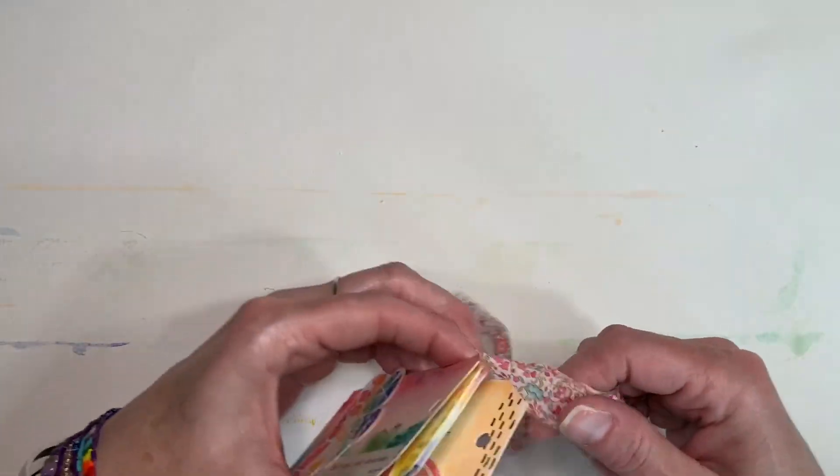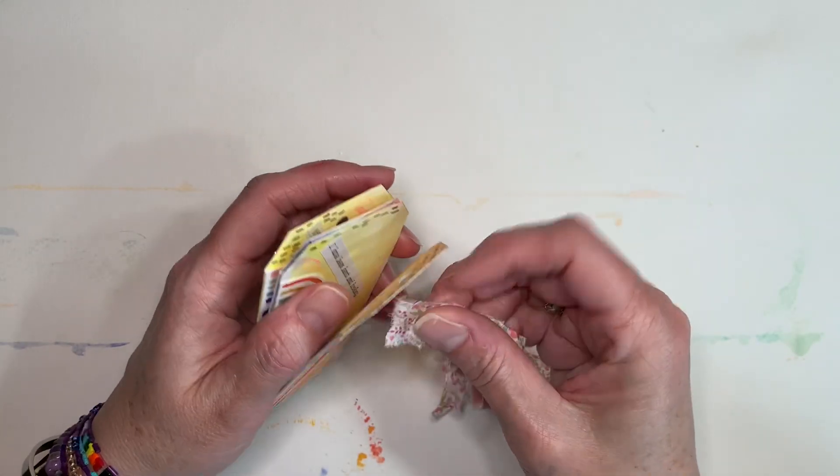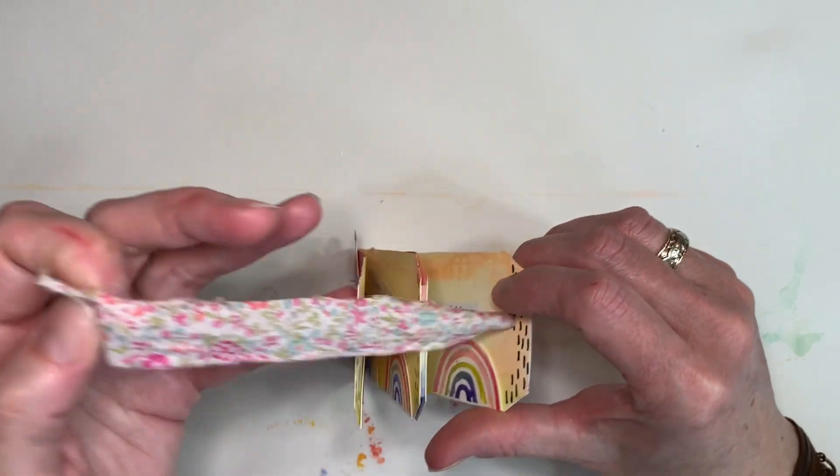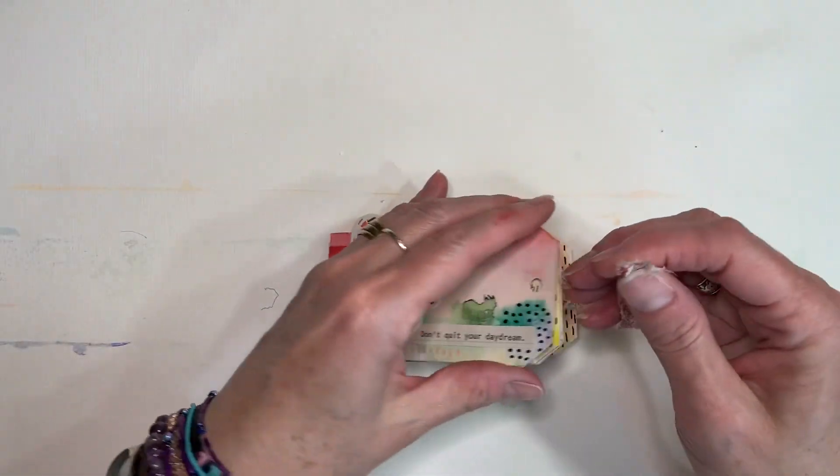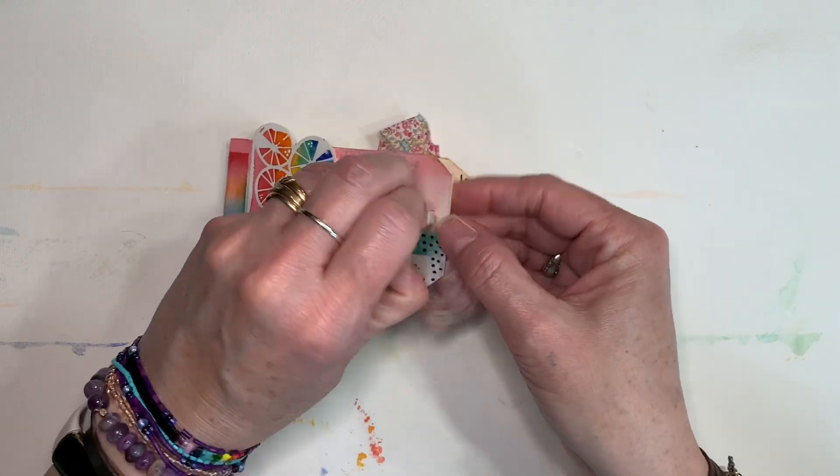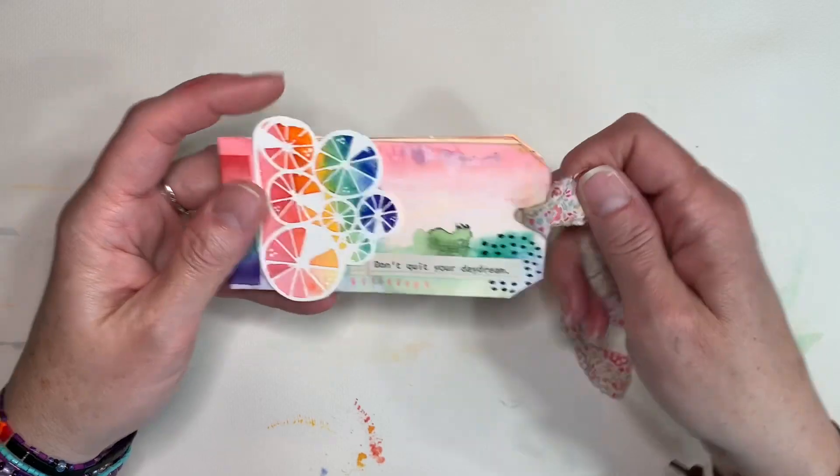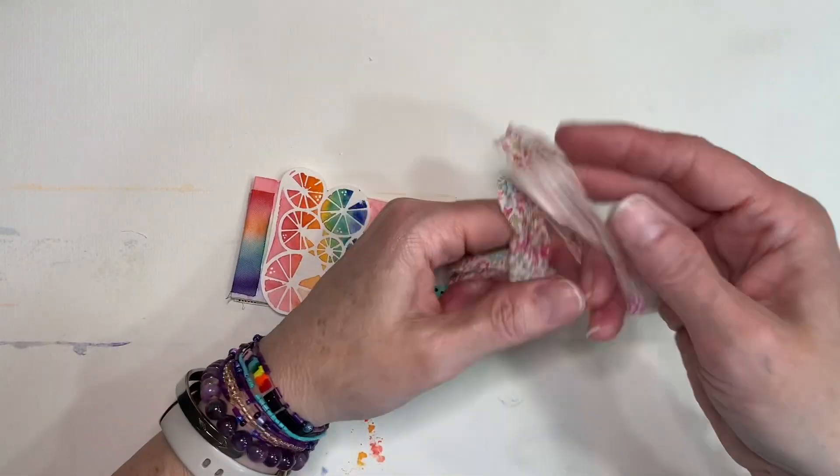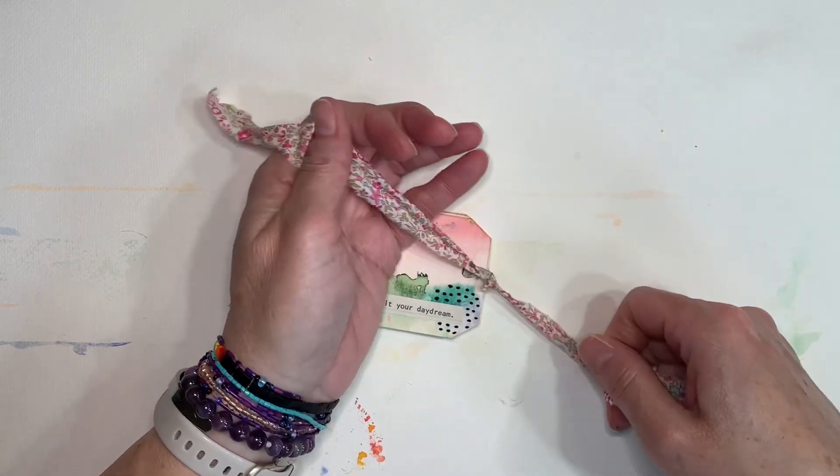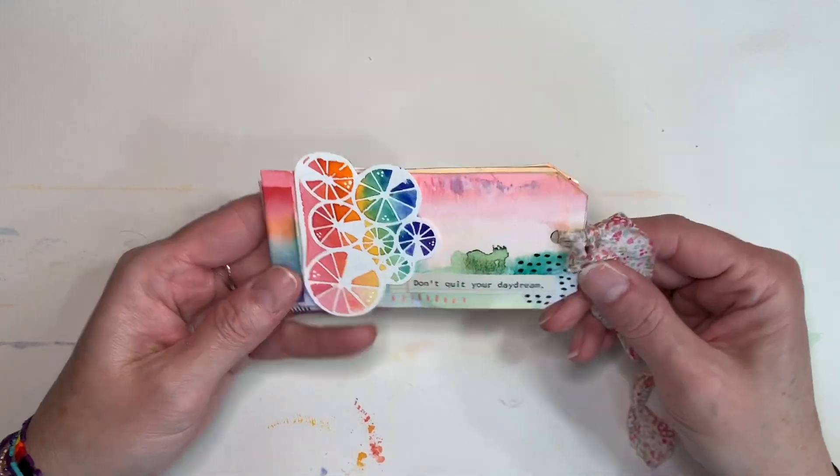And there you have it, my friends. This is a rainbow tag book. I think there are so many possibilities with this book. You can put pictures in it to commemorate a trip. You can put quotes in it. There are a ton of things that you can do to make this book your own. I can't wait to see what you make. I hope you enjoyed the tutorial. Everybody have a great rest of your day. Thanks for watching!